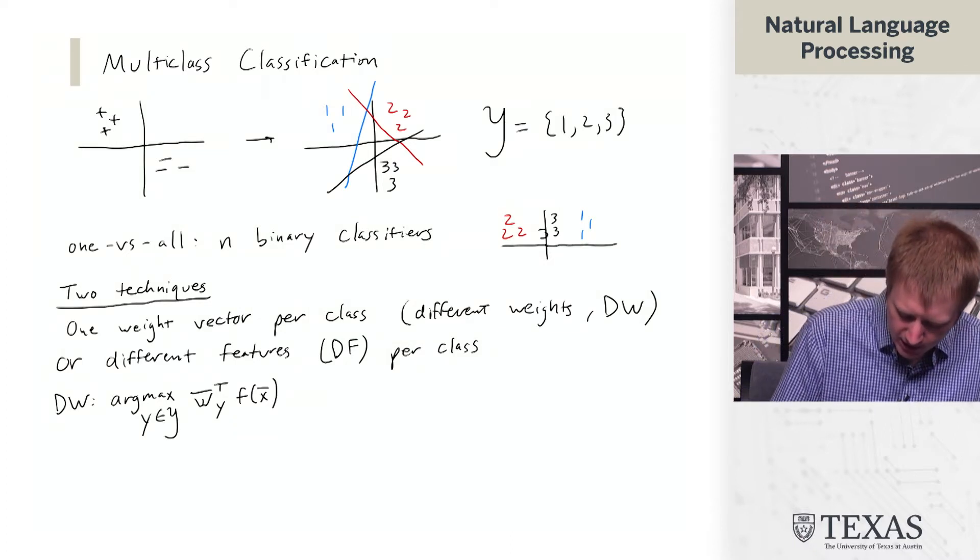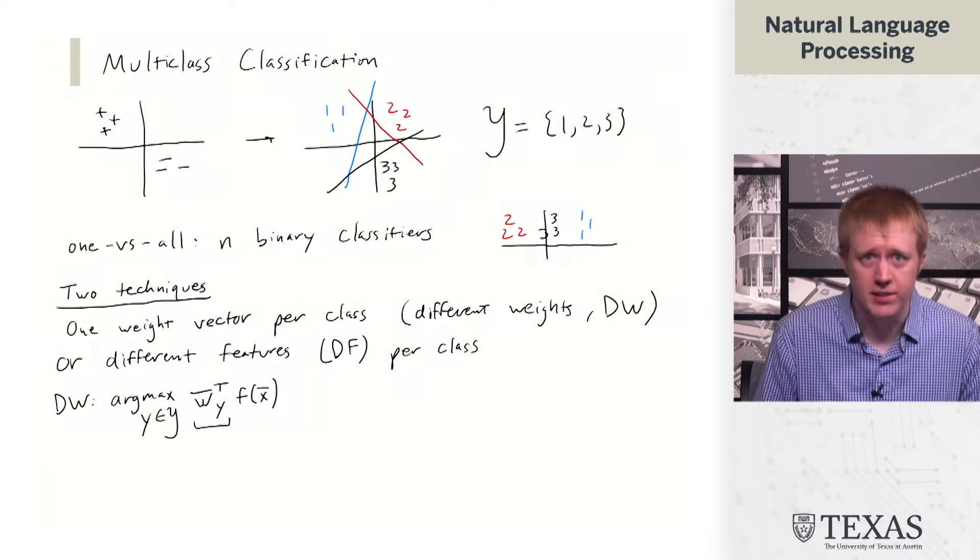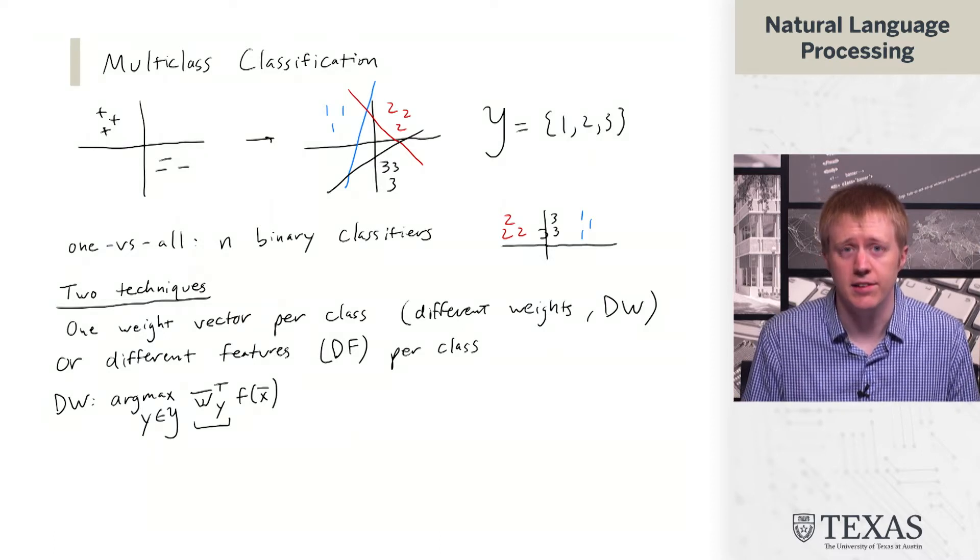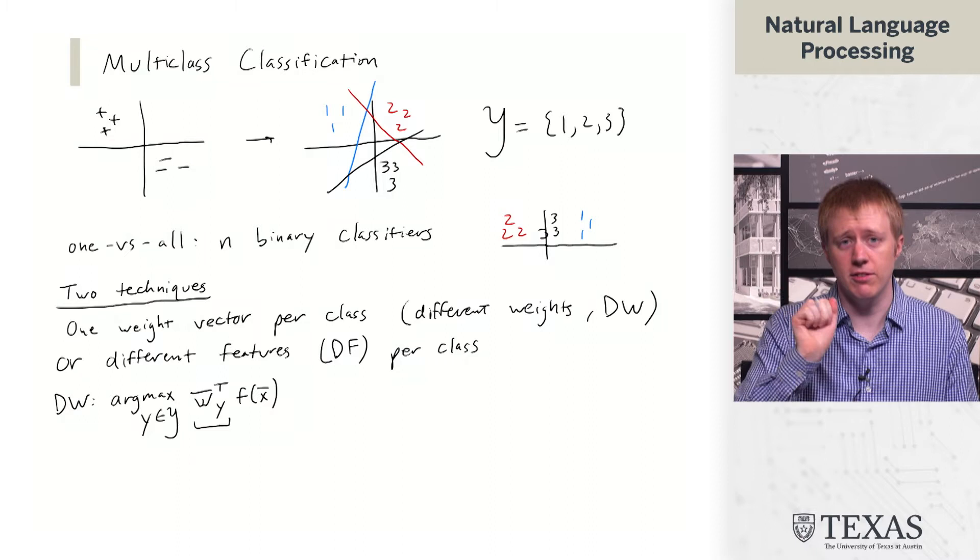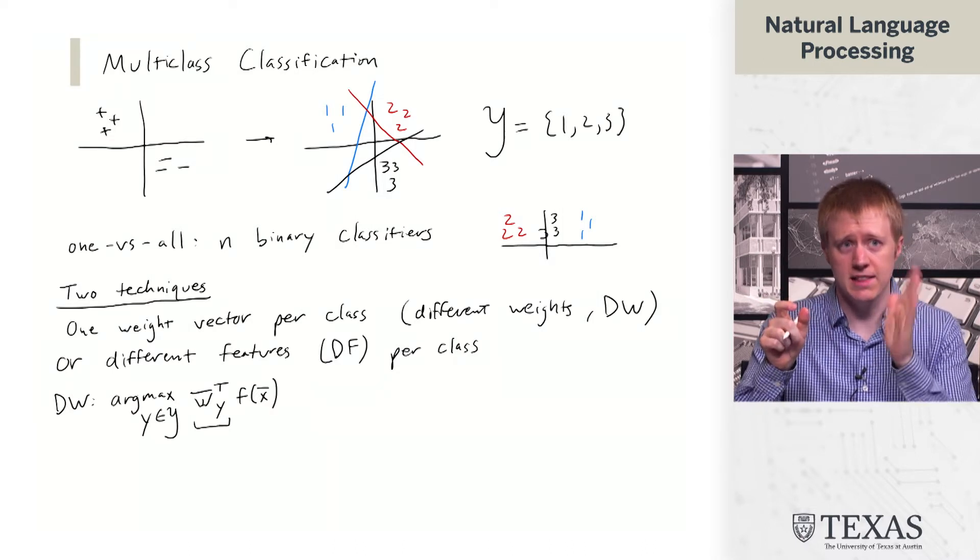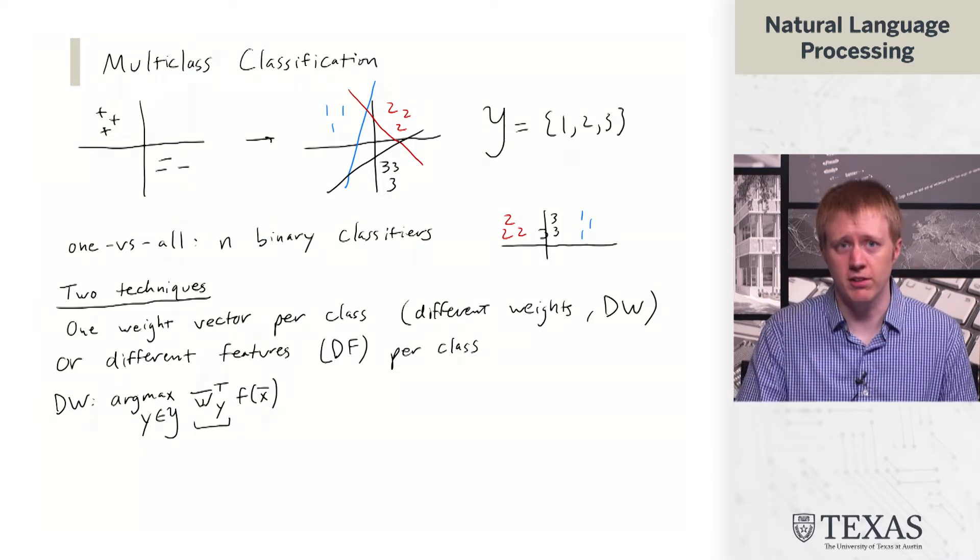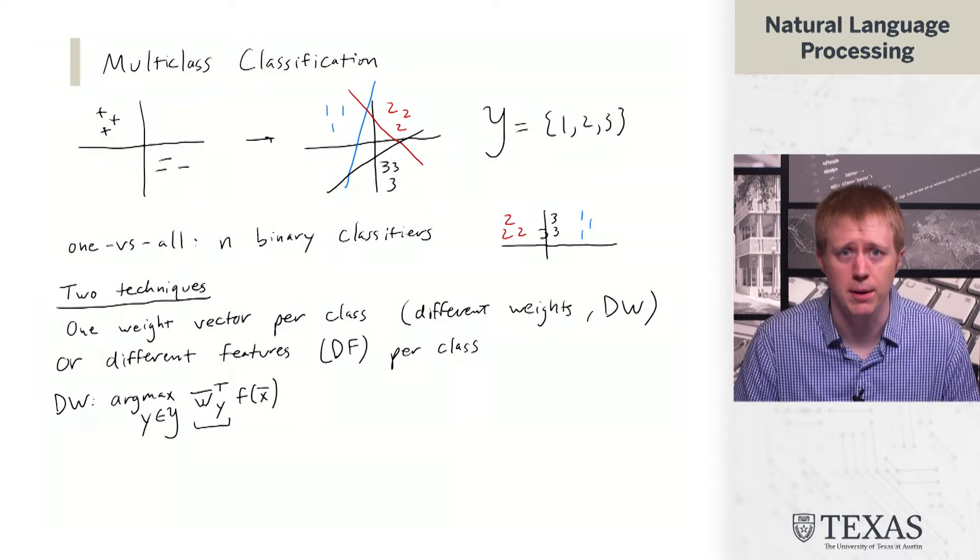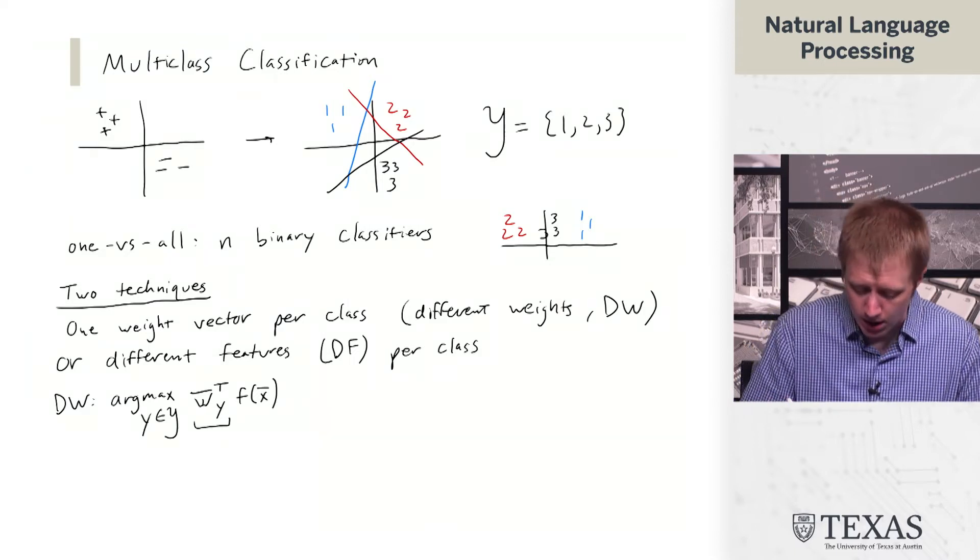And the expression is this. What we have here now is w is indexed by y. We have a fixed set of features and then we say I'm going to hit this with a whole bunch of different weight vectors, and whichever weight vector has the highest dot product with it, that's my prediction.